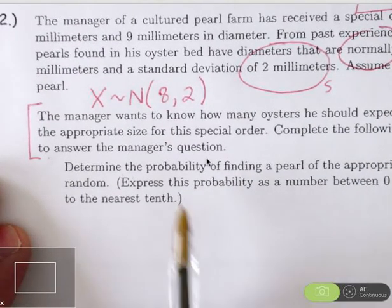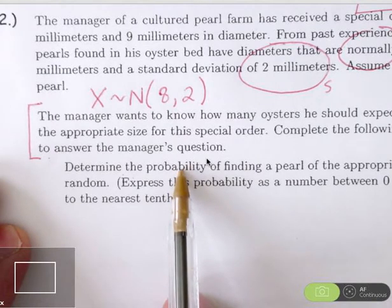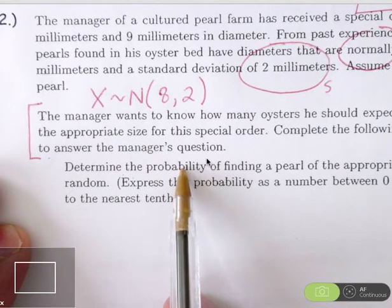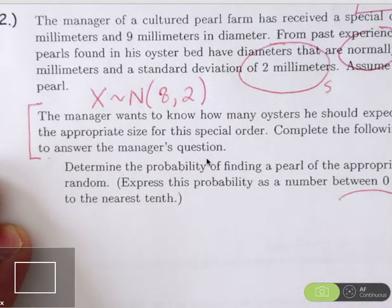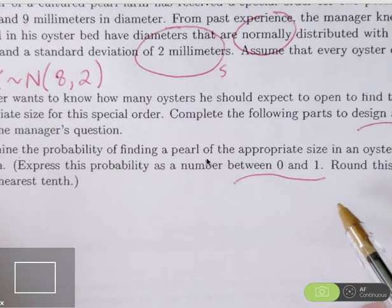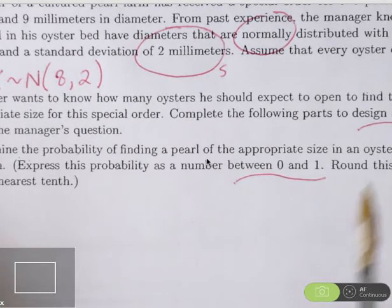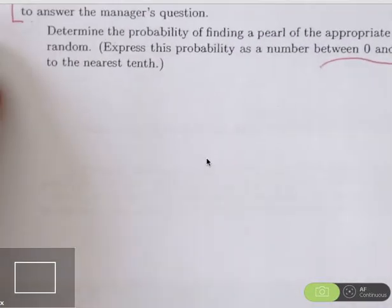Determine the probability of finding a pearl of the appropriate size. Remember that size is between 7 and 9 millimeters if an oyster is selected at random. Notice we're expressing the probability as a number between 0 and 1. We can think of that as the percentage that we're going to find by using a normal distribution, and we will round our probability to the nearest tenth. We are interested in finding a pearl of the appropriate size. We've already been told that the appropriate size is between 7 and 9 millimeters. Drawing a picture will help us get this started.